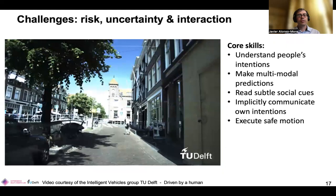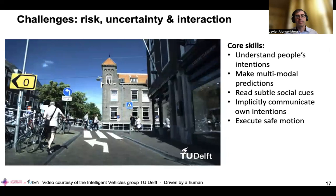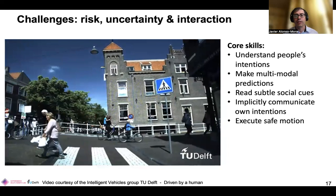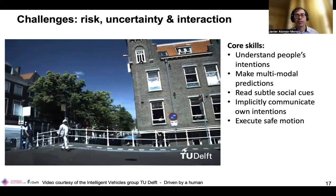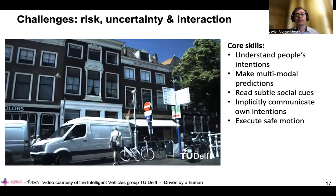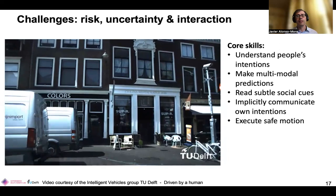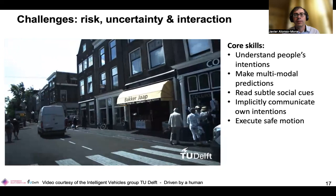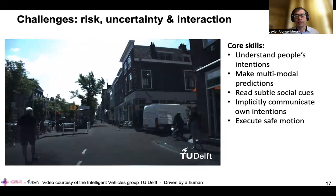Imagine your AV is driving in a city like Delft. It needs to understand the intentions of other traffic participants — pedestrians, bikers, cars, vans. It needs to make multimodal predictions of what will happen in the future. It needs to be able to read subtle social cues and implicitly communicate its own actions. If the car accelerates, the pedestrian is likely to pass in front. So there is a level of interaction between the AV and traffic participants, and our vehicle needs to execute safe motion in real time — all in split seconds.